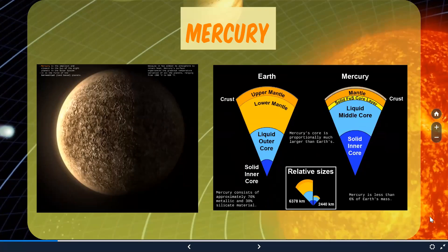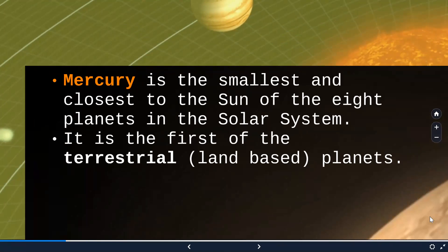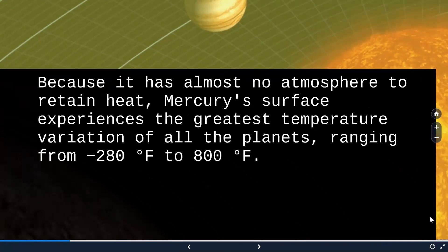Going to the first planet, which is Mercury — it is the smallest of the 8 planets in the solar system and the first of the terrestrial planets. Planets can be classified into two categories: the first four are land-based, composed mainly of rocky material, and the remaining four are made up of condensed gas. So Mercury is the first of the land-based planets. It has almost no atmosphere to retain heat, giving it a wide temperature range from minus 280 degrees Fahrenheit to 800 degrees Fahrenheit.